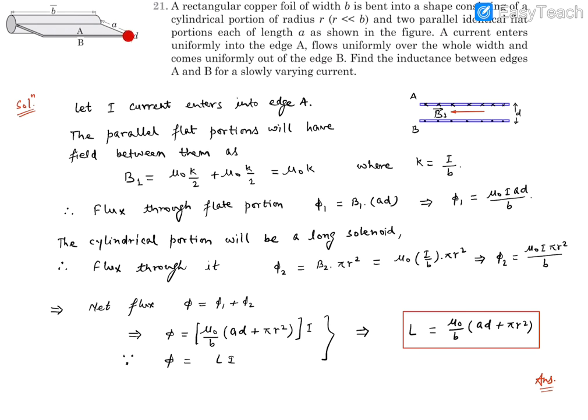The area ad will be perpendicular to B. B₁ is the magnetic field that we calculated. So φ₁ turns out to be B₁ times ad. B₁ is μ₀I/b times ad. This is the flux through the area between the flat portions.